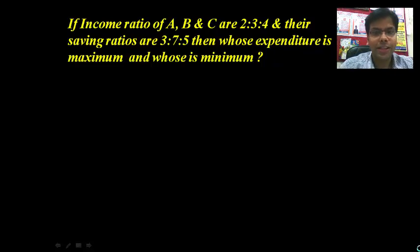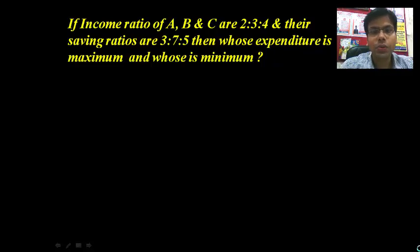Hello friends. Today we will try to solve a question and learn a faster method to solve this one. If income ratio of A, B and C are 2:3:4 and their saving ratios are 3:7:5, then whose expenditure is maximum and whose is minimum? We have to find the maximum and minimum expenditure.